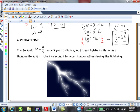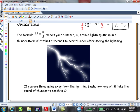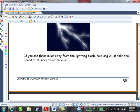Okay. So next up, we've got a little application for you. I always like this one. It's about lightning. So the formula M equals N divided by 5 models your distance M from a lightning strike in a thunderstorm if it takes N seconds to hear thunder after seeing the lightning. If you are 3 miles away from a lightning flash, how long will it take the sound of thunder to reach you? So go ahead and pause the movie and try to work this one out on your own.